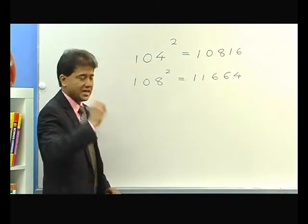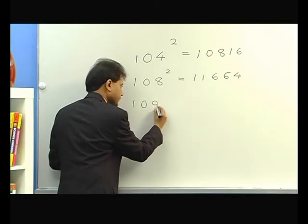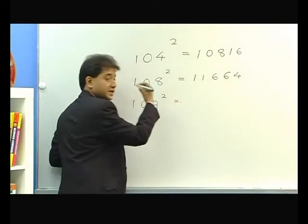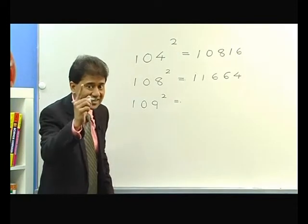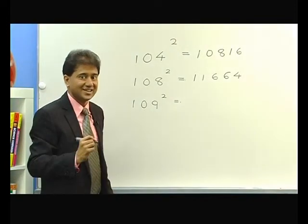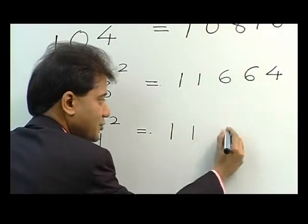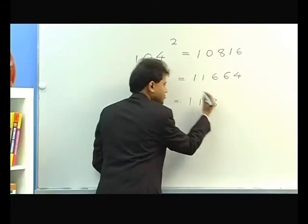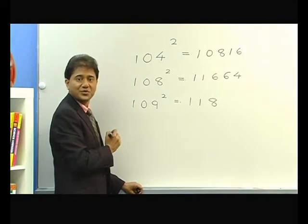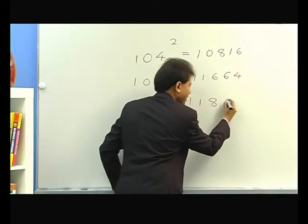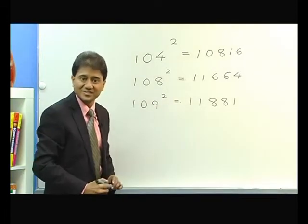Let me take another one. 109 square. The difference from 100 is 9. You add this 9 to 109, you get 118. 9 square is 81. So you write 81 in the end and this is your answer.